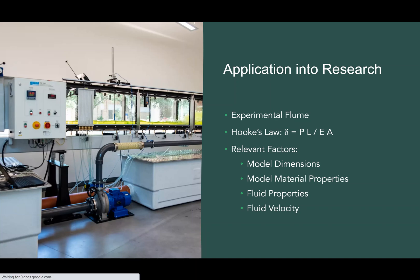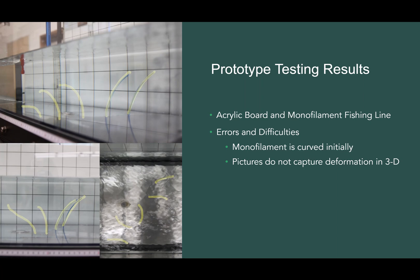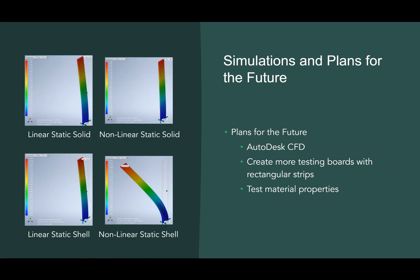Now here's Levi Dehoyos. For our initial test, we made acrylic boards that could be installed into the experimental flume. The idea was to install monofilament fishing line onto the board and measure its deformation in a constant flow by taking before, during, and after side-view images. However, we quickly realized that any data gathered from this experiment using monofilament would not be usable. That is because, due to the cylindrical nature of the monofilaments, the fluids deform the bodies in three dimensions rather than the two we are able to capture.